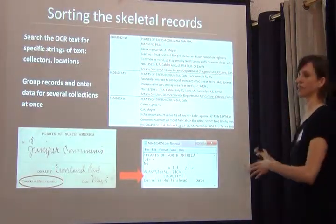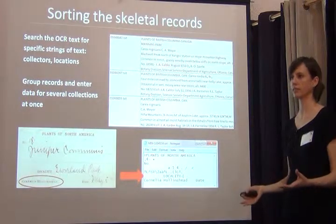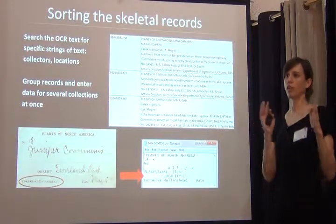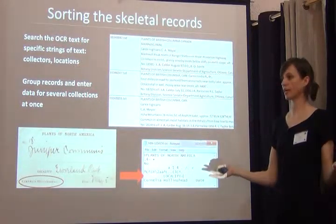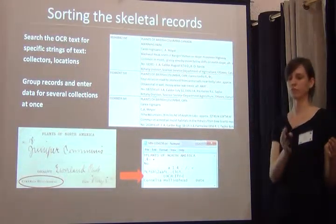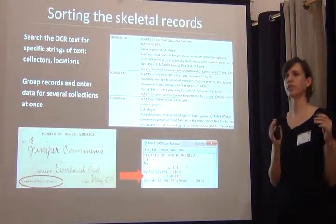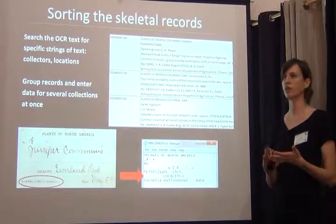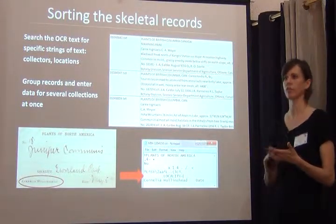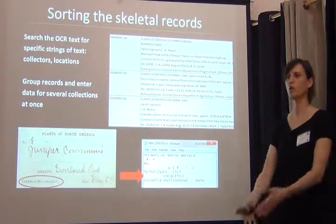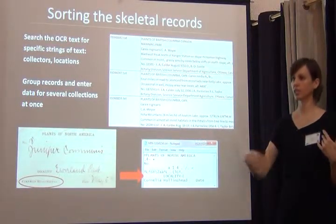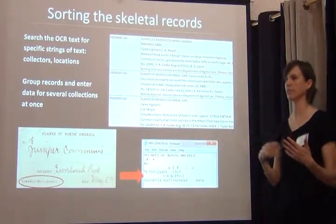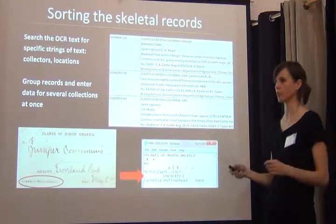Then we sort the skeletal records, using the OCR text. This is where the field book data entry really helps: having entered, say, 20 collectors' field books, you go collector by collector, search for their name string, search all the OCR texts for the various formats you might find, pull all those records out at once, and then use the collection events already added from the field books to attach them to the correct scientific name. Then you've already entered most of the data.